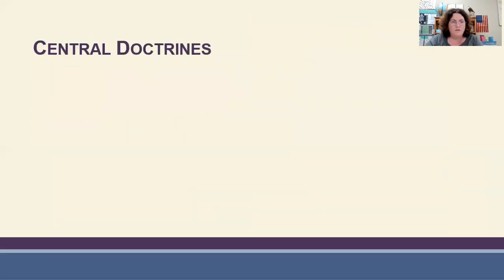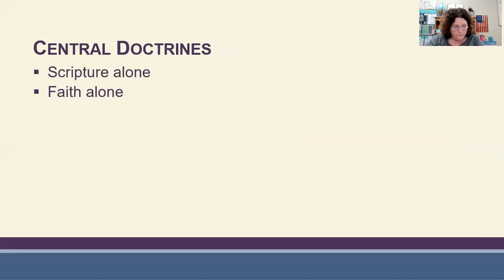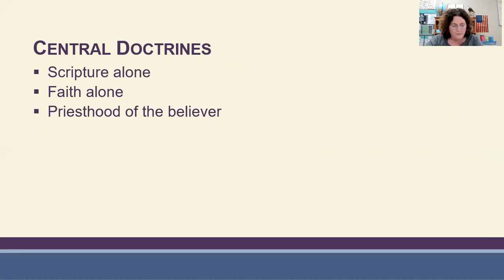Protestants are people who choose to follow Scripture and left the Roman Catholic Church. The central doctrines of the Reformation were Scripture alone and faith alone. Regarding the priesthood of the believer: the Renaissance emphasis on the individual prepared people to accept this doctrine. The reformers emphasized that people come to God as individuals, and upon receiving salvation through Christ, each person is made a priest with direct access to the saving benefits of Christ.